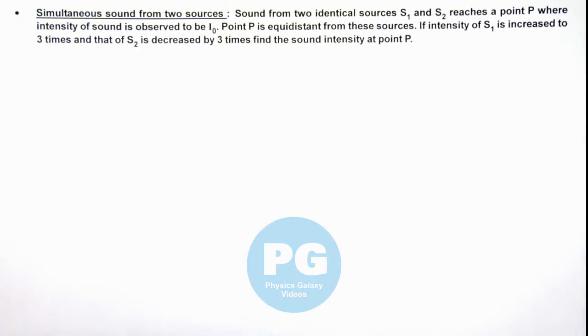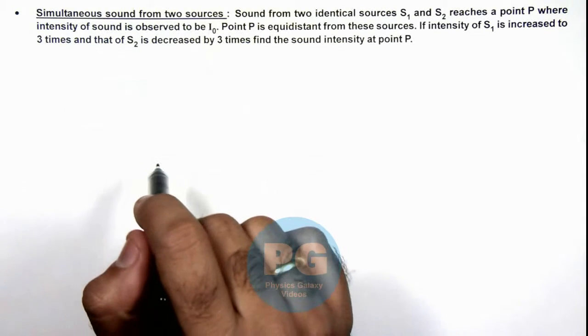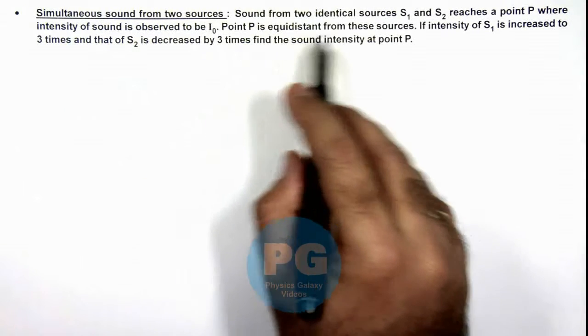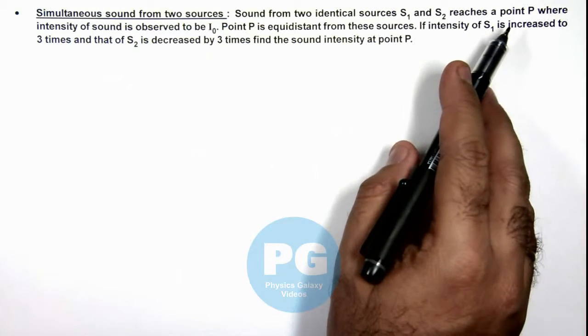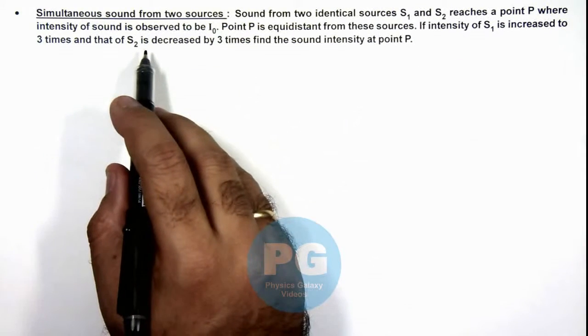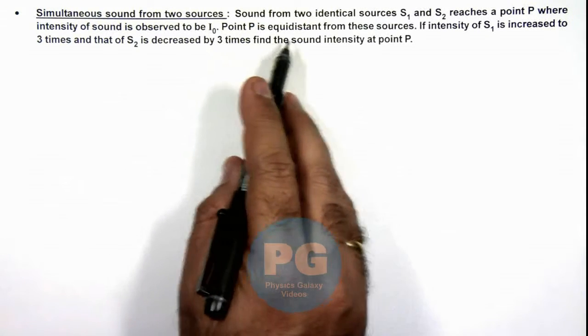In this illustration, we'll discuss simultaneous sound from two sources. Sound from two identical sources S₁ and S₂ reaches a point P, where intensity of sound is observed to be I₀, and point P is equidistant from these sources.